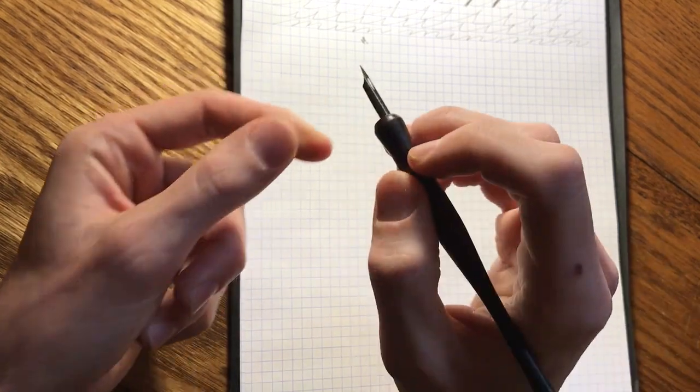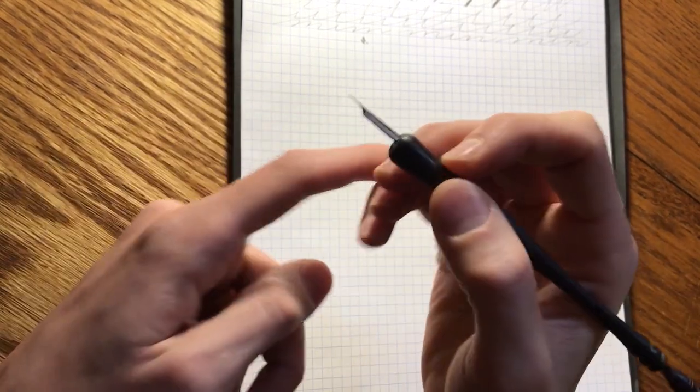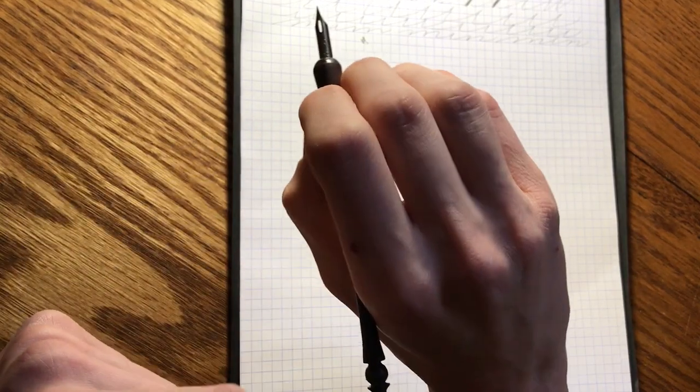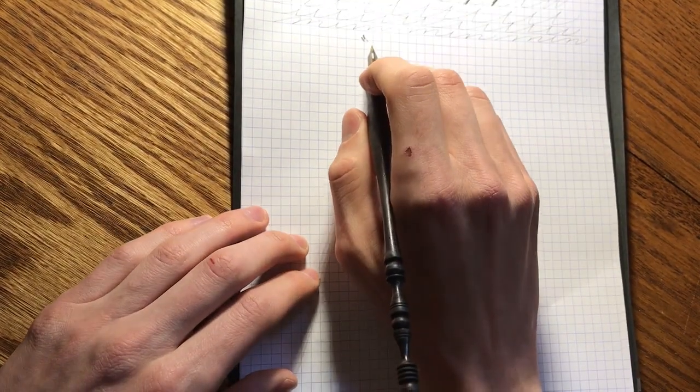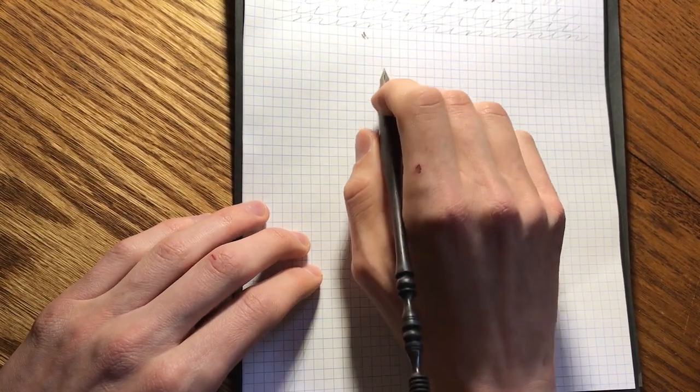All your fingers are going to be curled like that, and what this promotes is a palm down grip where the palm is facing down on the paper, not to the side like this. This is going to do nothing for you, that's going to promote finger writing.